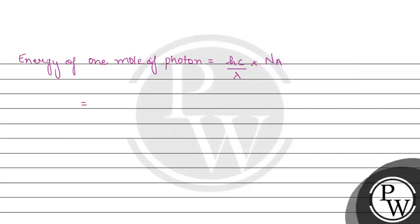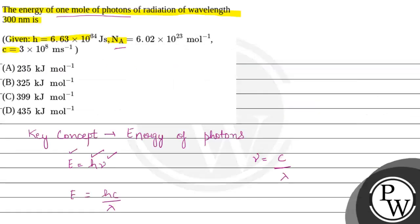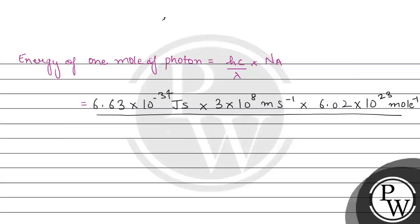Now let us put in all the values. H, Planck's constant, is 6.63 × 10⁻³⁴ joule·second. The speed of light is 3 × 10⁸ meter per second. Avogadro's number is 6.02 × 10²³ per mole. The wavelength is 300 nanometer, which is 300 × 10⁻⁹ meter, divided into the denominator.